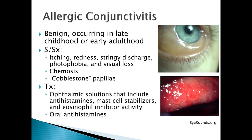Allergic conjunctivitis is typically a benign condition occurring late in childhood and early in adulthood. Signs and symptoms include itching — whenever you see conjunctivitis with an itchy eye, you're thinking allergic. There is also redness, and the discharge in this type is more of a stringy discharge. Sometimes people will complain of photophobia and vision loss. They may also have chemosis, which is a puffiness of the eye that stops at the edge of the limbus.